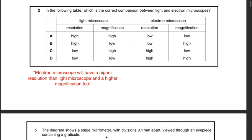Question 2: which is the correct comparison between light and electron microscopes? A key thing to remember is that the electron microscope has higher resolution and higher magnification than the light microscope. Looking at answers A, B, C, and D — electron microscope having higher resolution and higher magnification — that leaves us with the answer being B.